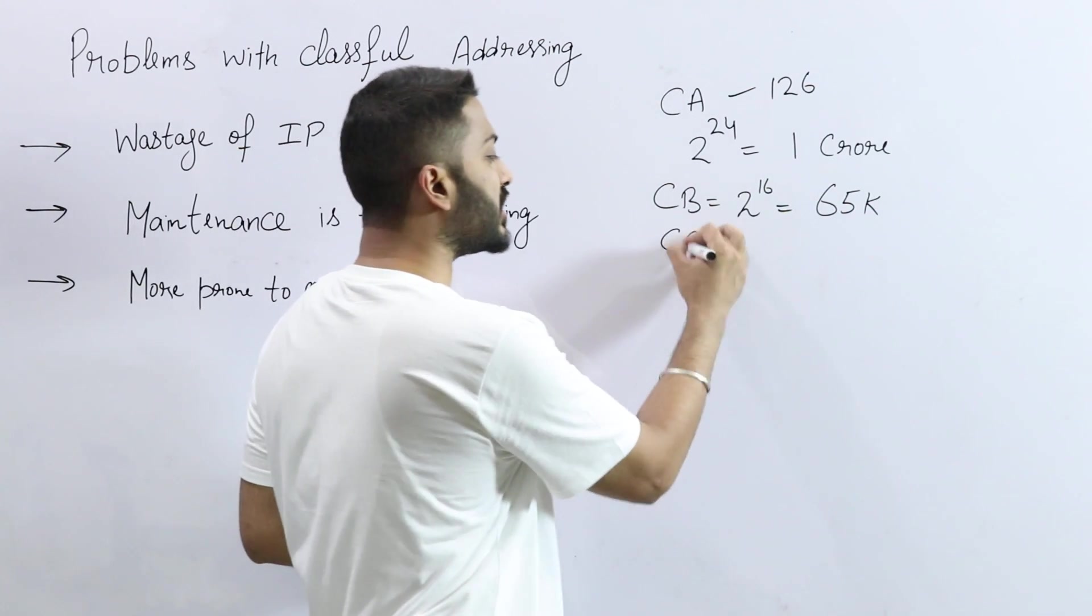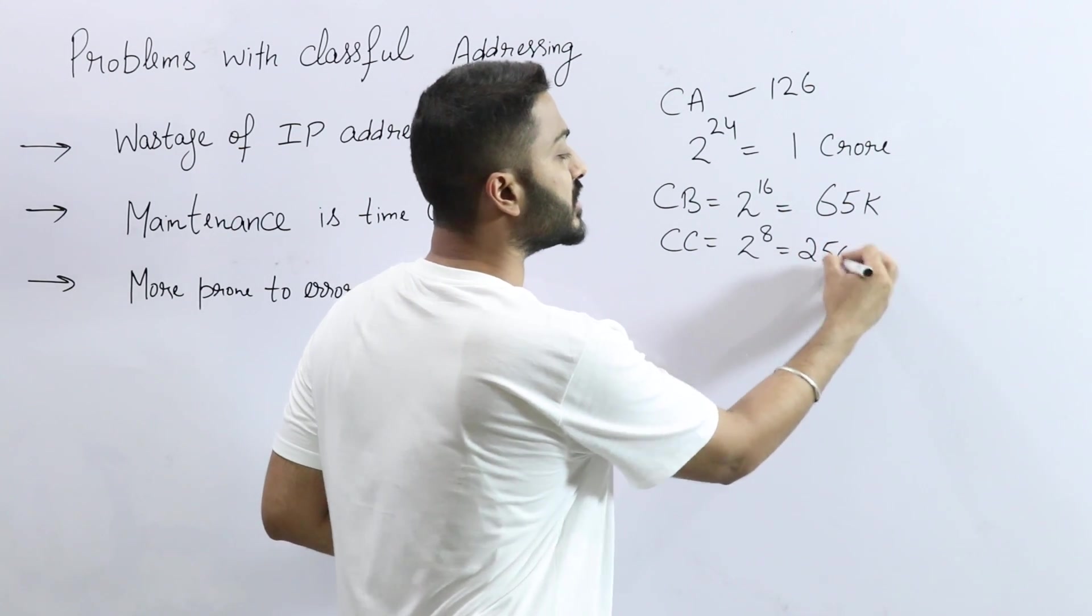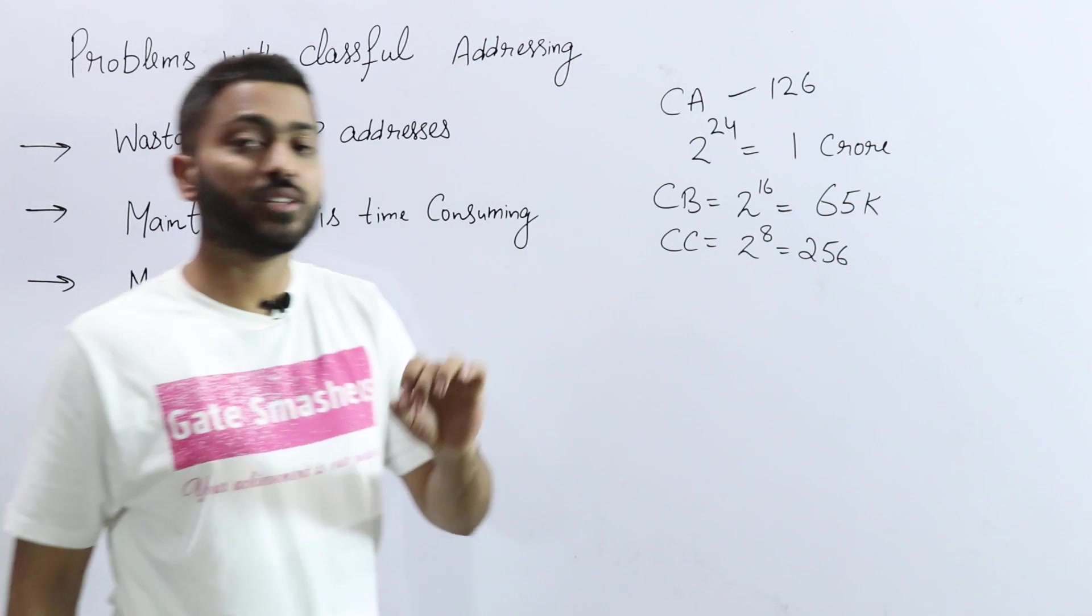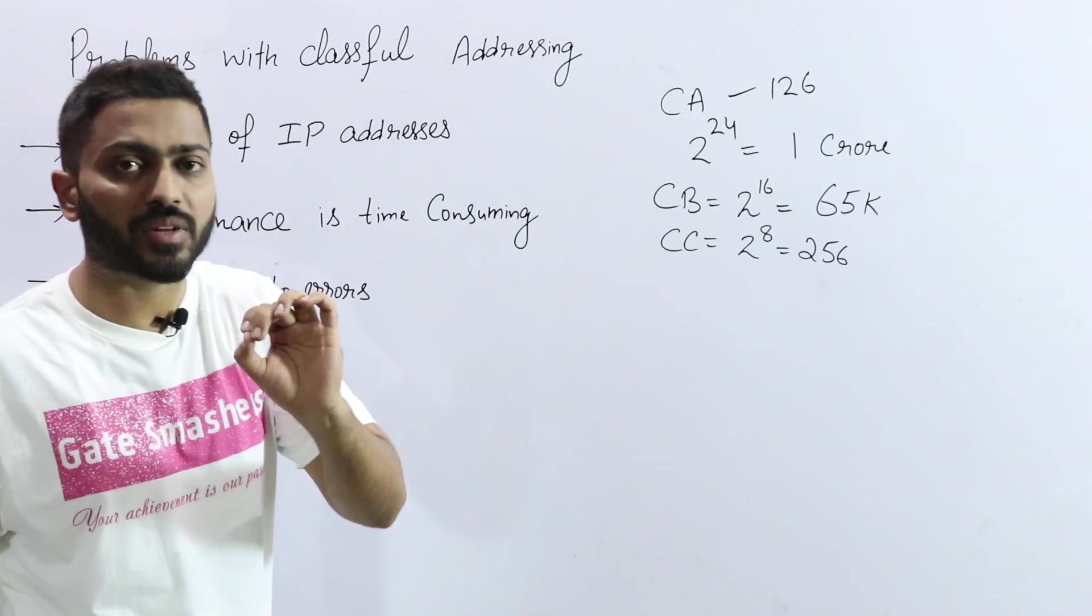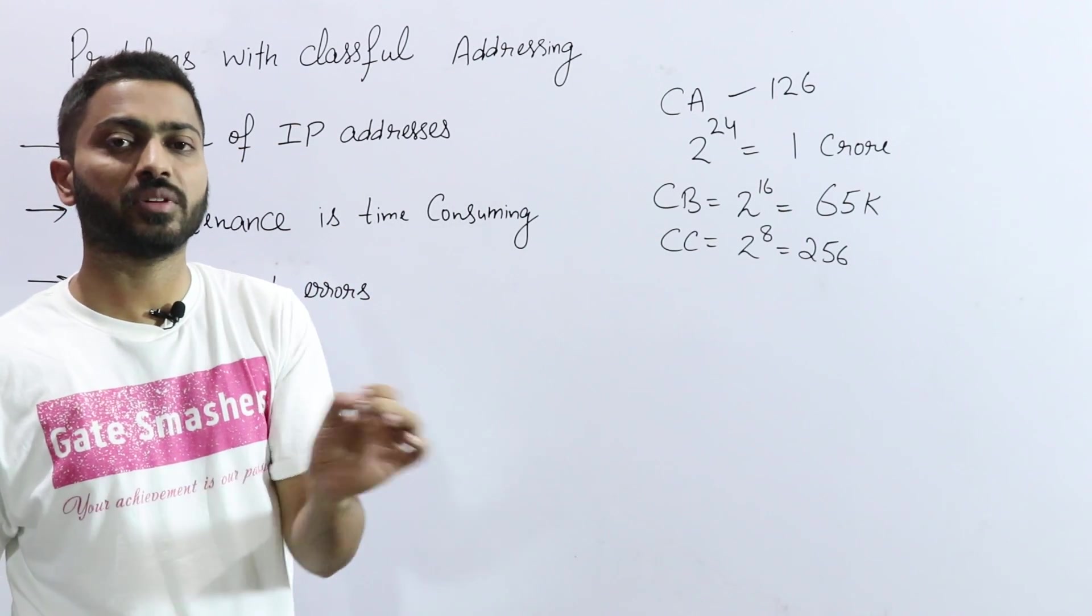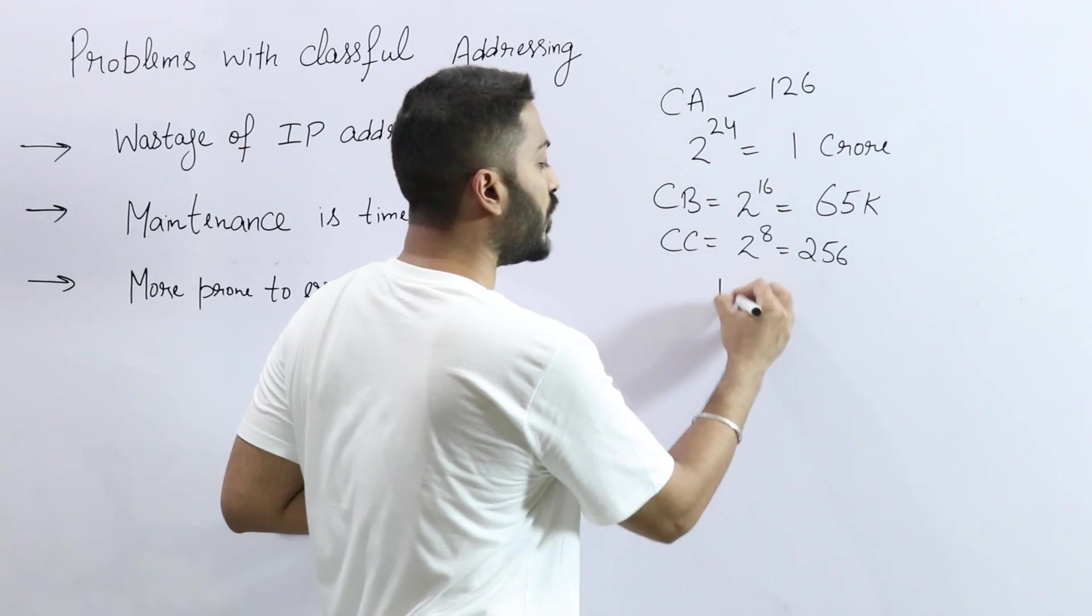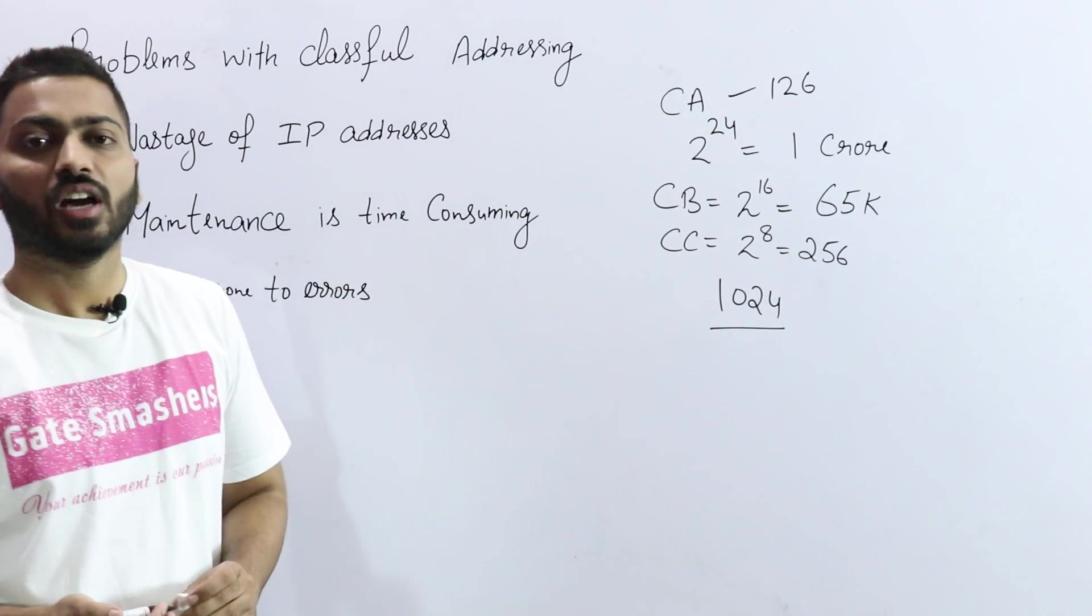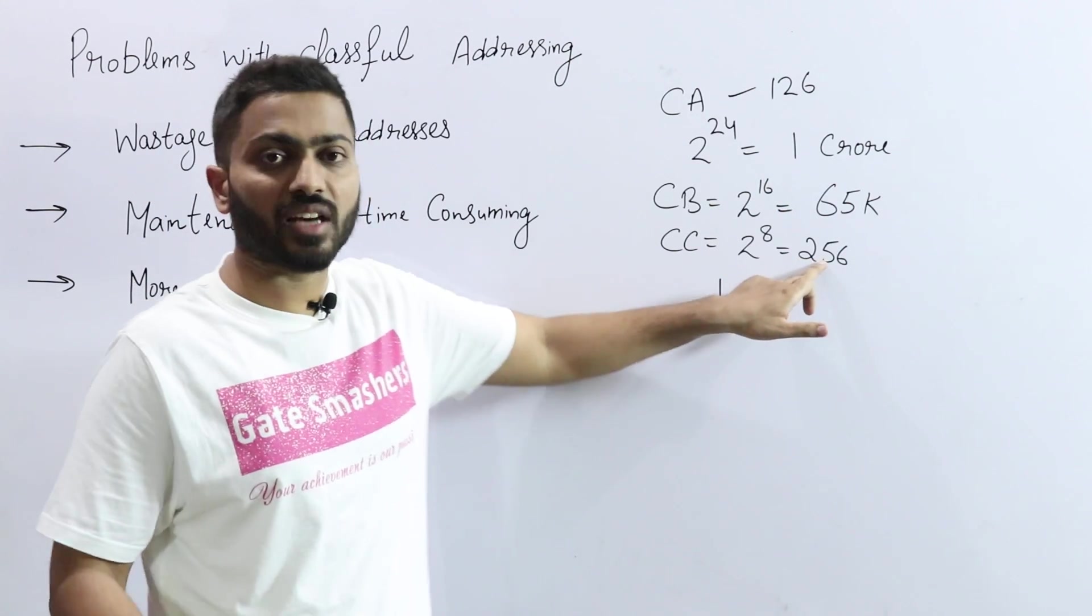Class C, the number of hosts in every network is 256, which is a very small number. Meaning, here I have a flexibility problem. The flexibility concept is that if my organization needs, let's say, 1024 IP addresses, class C cannot adequately provide that.